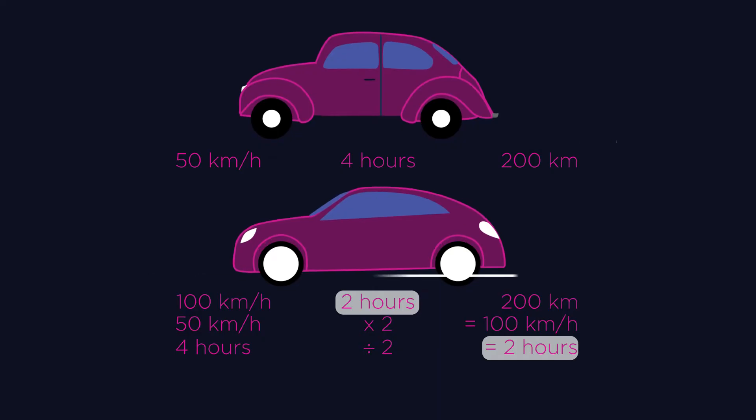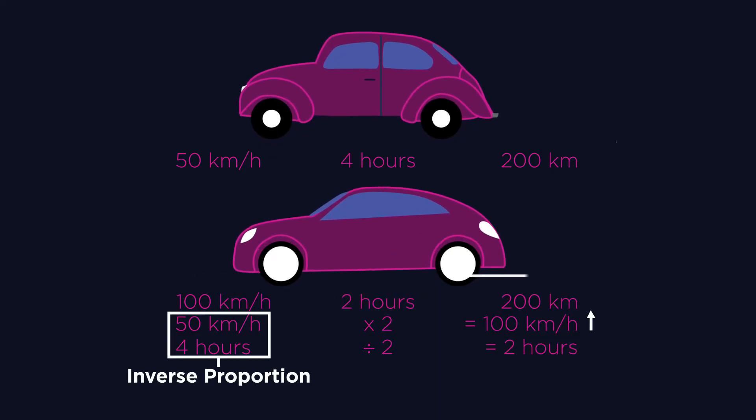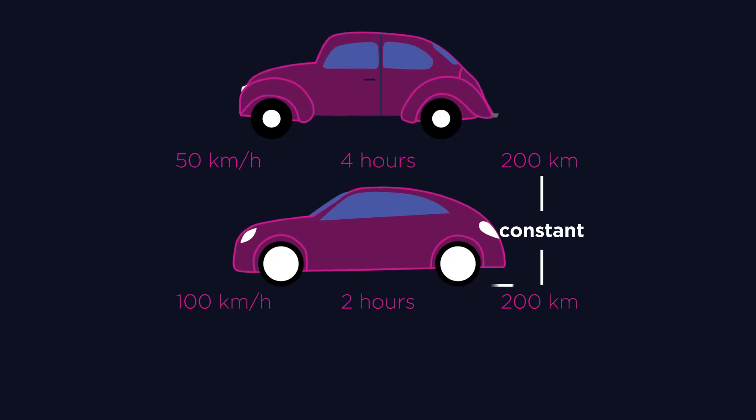Two quantities are said to be in inverse proportion if one quantity increases at the same rate that the other quantity decreases by. The product of the speed and the time gives the same number. In this case the distance: 50 times 4 equals 200, 100 times 2 equals 200. When two quantities are inversely proportional, their product is constant.